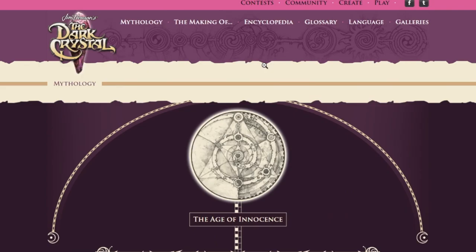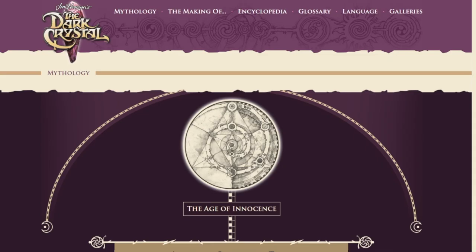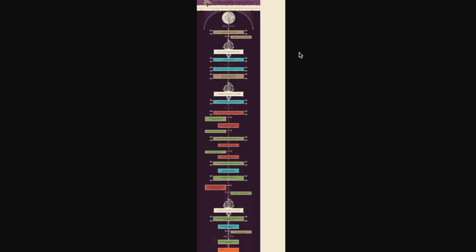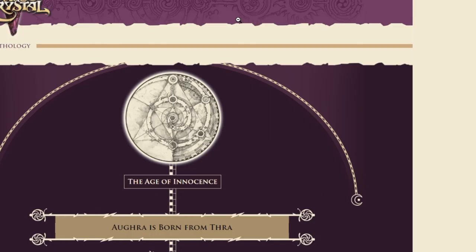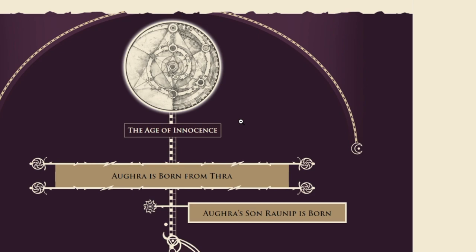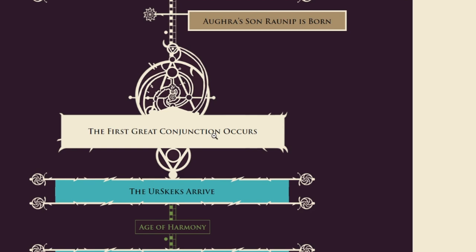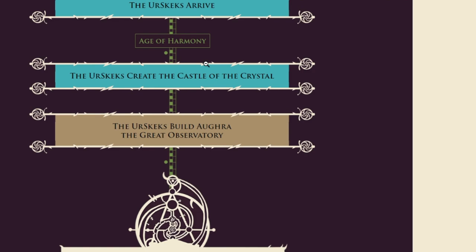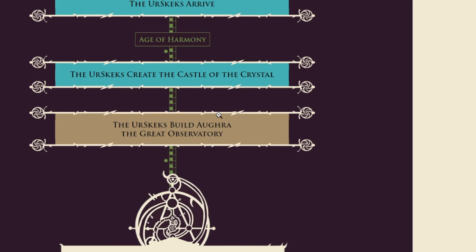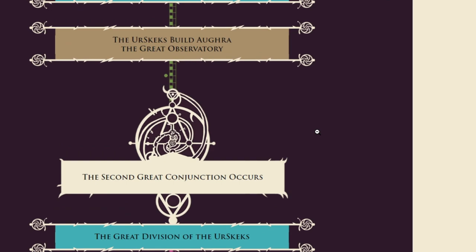There are just three basic ages of Thra. I screenshotted the whole timeline, conjoined it all together and made a much smaller timeline. Here's the beginning of Thra up top, which begins the Age of Innocence. You can see the origins of Agra, Agra has a son, we saw the Gelflings — that's part of the original creation of Thra as well. Then we hit the first conjunction, after which the Urskiks arrive, and that brings in the Age of Harmony.